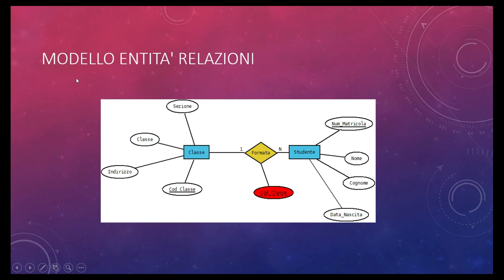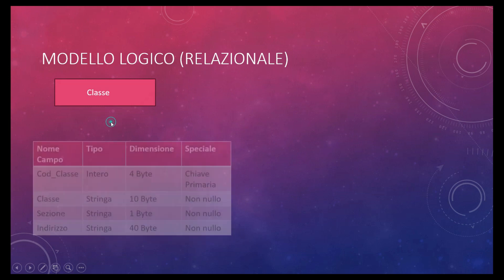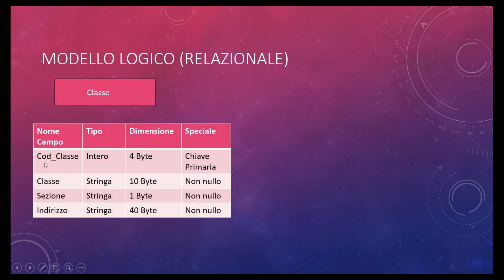Utilizzando le regole di derivazione spiegate nella lezione teorica, sappiamo che ad ogni entità corrisponderà una relazione o tabella, che a ogni attributo corrisponderà un campo, e che dovrà essere definita per ogni entità la chiave primaria ed eventualmente la chiave esterna laddove le tabelle devono essere correlate. Vedendo il modello logico tabellare, vediamo che i vari campi sono contraddistinti da un tipo di dati, una dimensione e delle annotazioni sulle caratteristiche specifiche di ogni attributo.